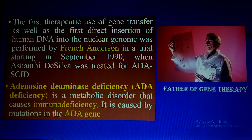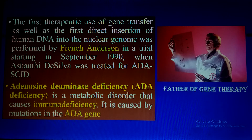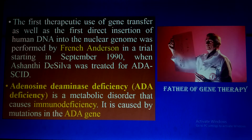The trial started in September 1990 when Ashanti DeSilva was treated for ADA-SCID. SCID is known as Severe Combined Immunodeficiency Syndrome, and this disease is caused by defects in the ADA gene. ADA stands for adenosine deaminase — the protein or enzyme. Mutations in the ADA gene cause Severe Combined Immunodeficiency Disease, which is an inherited disease found in infants.